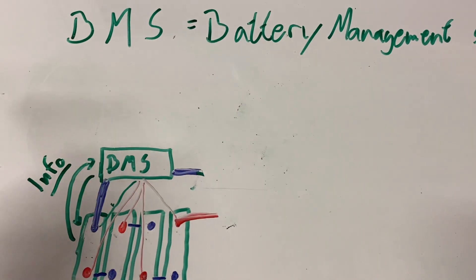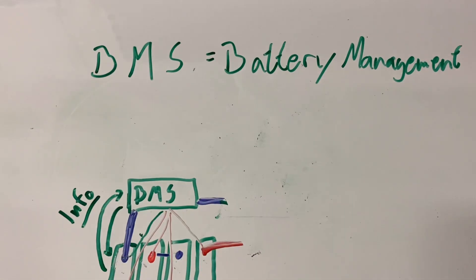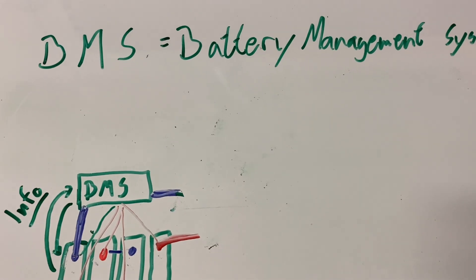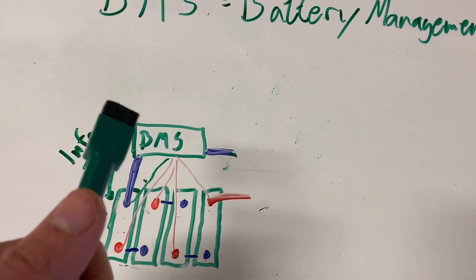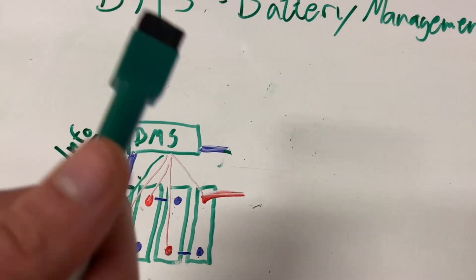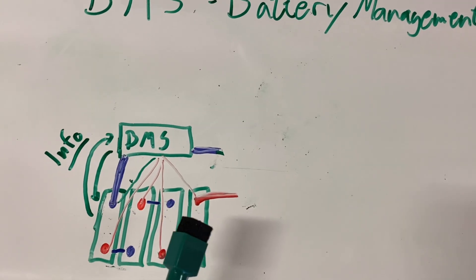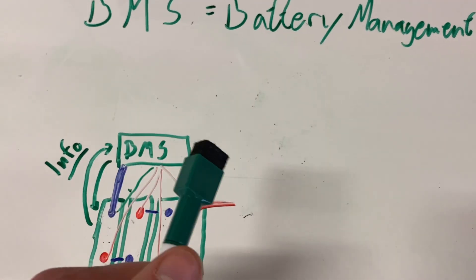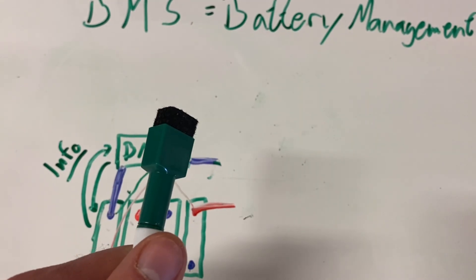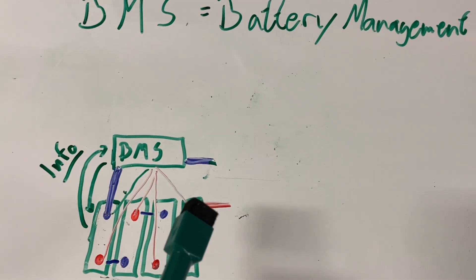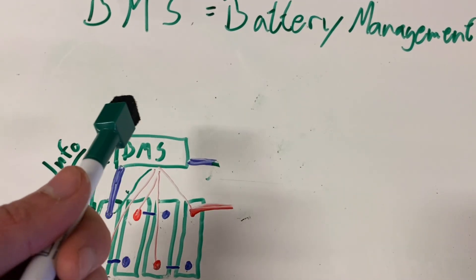So to recap, the BMS is your battery's bodyguard. It protects from overcharging, over discharging, temperature, and more. If your battery shuts off, it's probably not dead, it's just being smart.